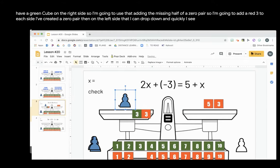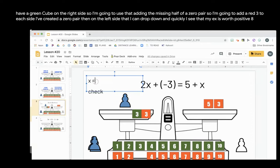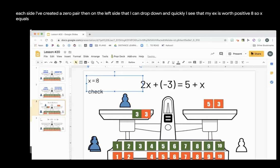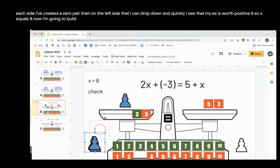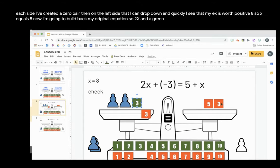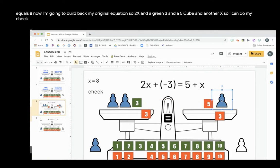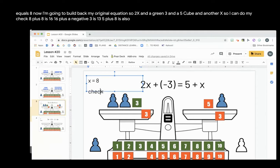And quickly I see that my x is worth positive 8. So x equals 8. Now I'm going to build back my original equation. So 2x and a green 3 and a 5 cube and another x. So I can do my check. 8 plus 8 is 16. 16 plus a negative 3 is 13. 5 plus 8 is also 13. So my check is 13 equals 13.